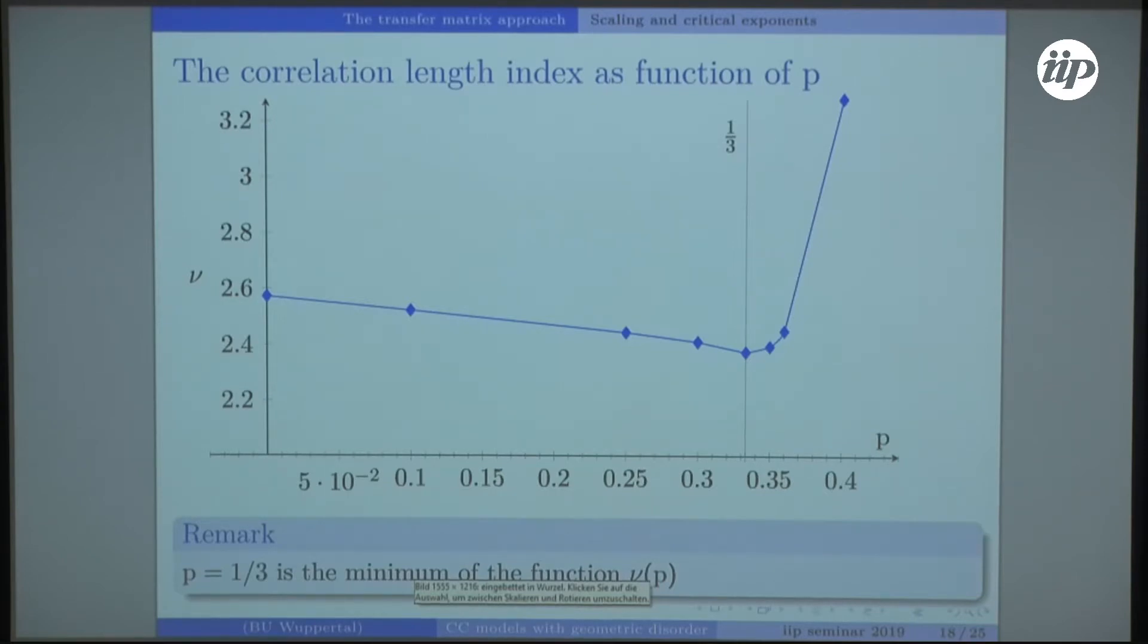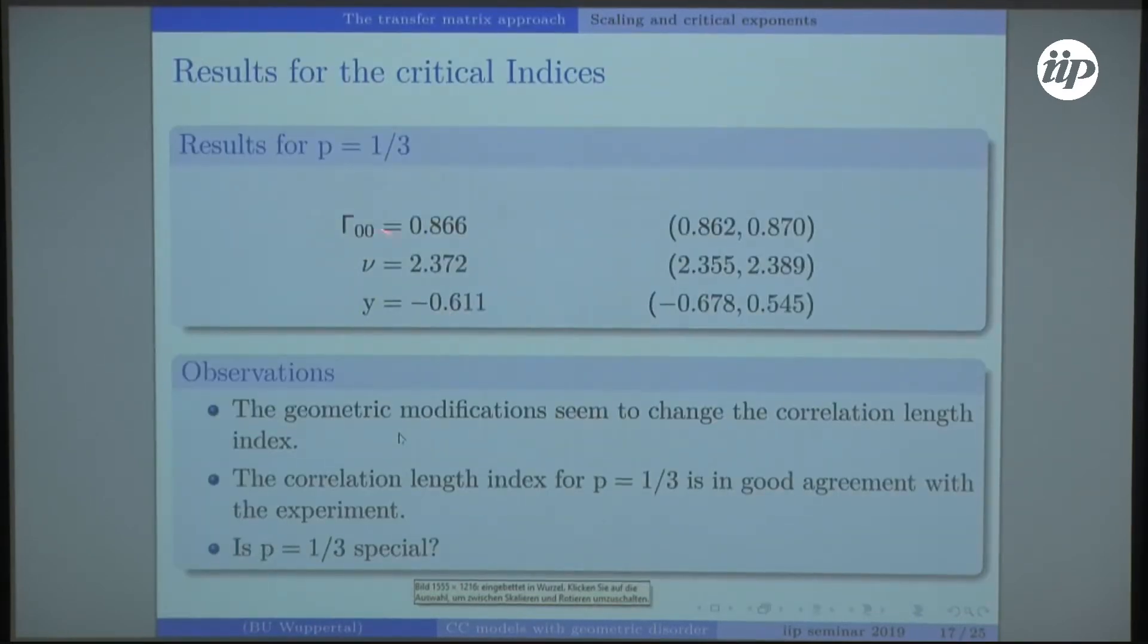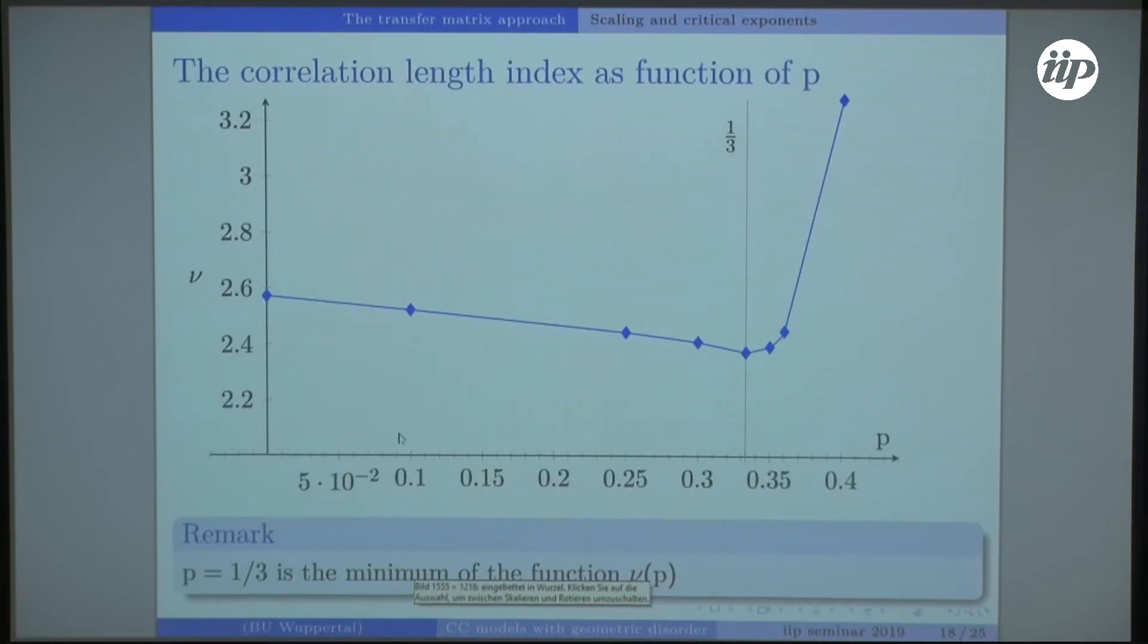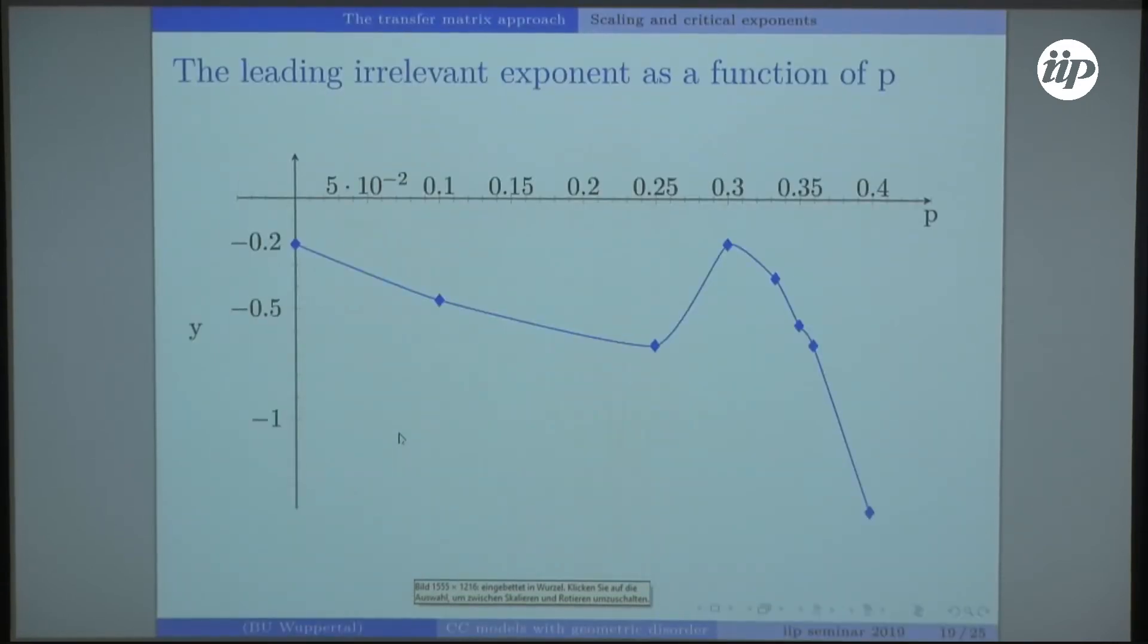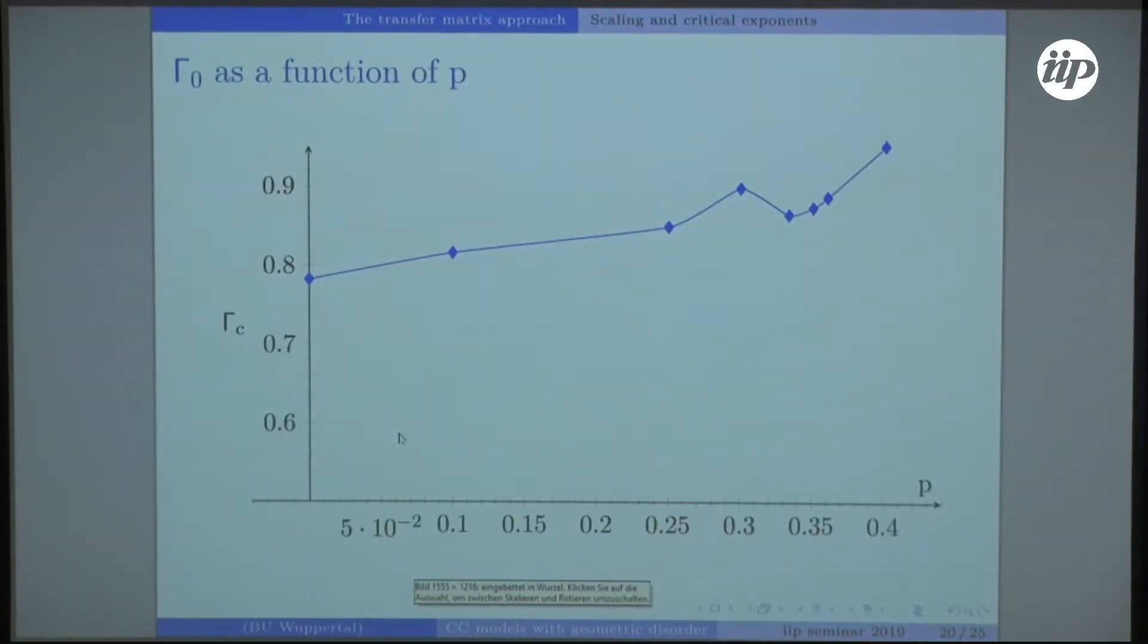If we now look at the other parameters of special interest in dependence on p, we unfortunately do not have one-third as a special case there. The peak is a bit before. The same is for the constant coefficient of the expansion of the scaling function.